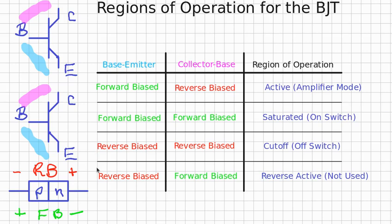The last possibility, where the base-emitter junction is reverse biased and the collector-base junction is forward biased, is called reverse active. The transistor behaves as if you switch the collector and emitter in the active region. This region is almost never used because collectors and emitters are optimized for their purposes in the active region.